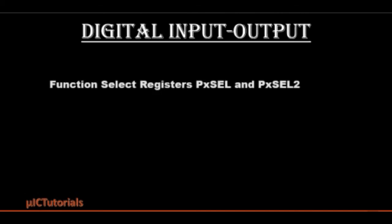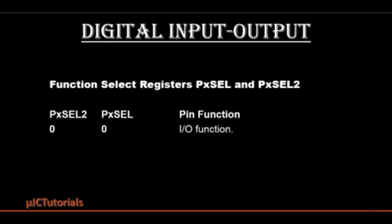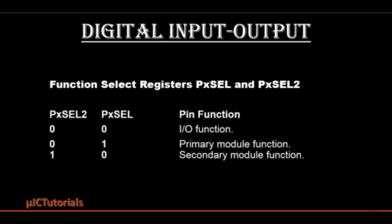Digital input-output port pins are multiplexed with up to four different functions. The PXSEL and PXSEL2 registers allow individual digital input-output port pins to be associated with internal peripheral module functions, or simply left as standard input-output ports. The bit combinations select a particular pin function: if both PXSEL and PXSEL2 are low, the I/O function is selected; if PXSEL is high and PXSEL2 is low, the primary module function is selected; if PXSEL is low and PXSEL2 is high, the secondary module function is selected; if both are high, the tertiary module function is selected.